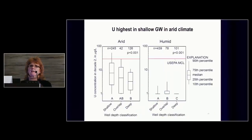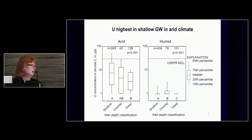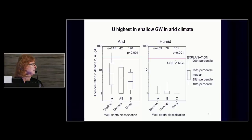As in the eastern San Joaquin Valley, in the arid environment the highest uranium is in shallow groundwater, decreasing with depth. A shallow well is screened at 150 feet or less below land surface; a deep well is screened more than 150 feet below land surface. In the humid environment, the relationship with depth is quite different.